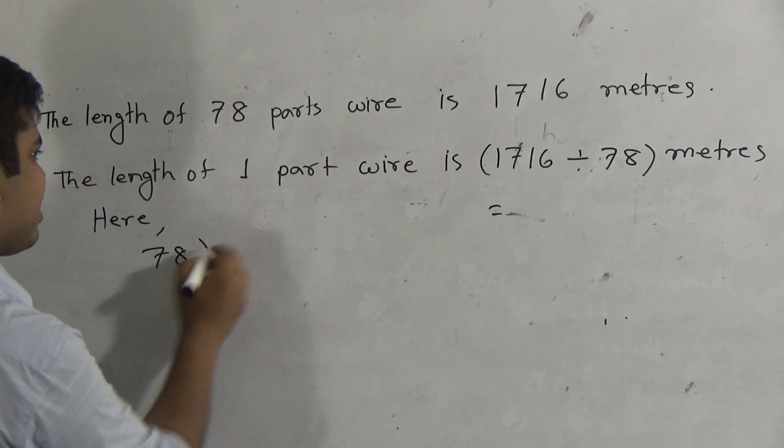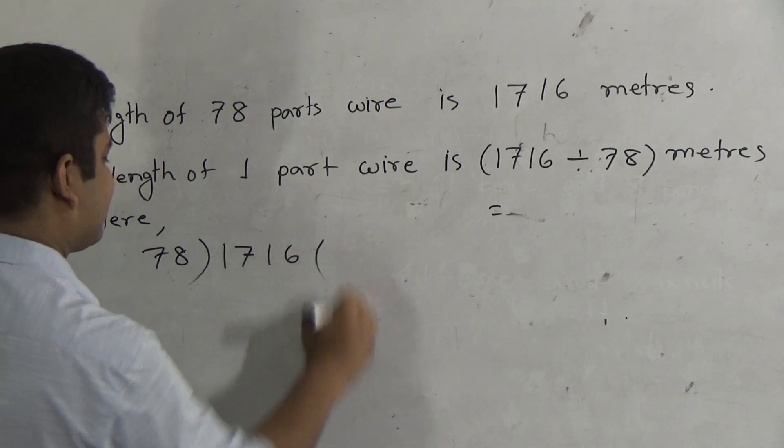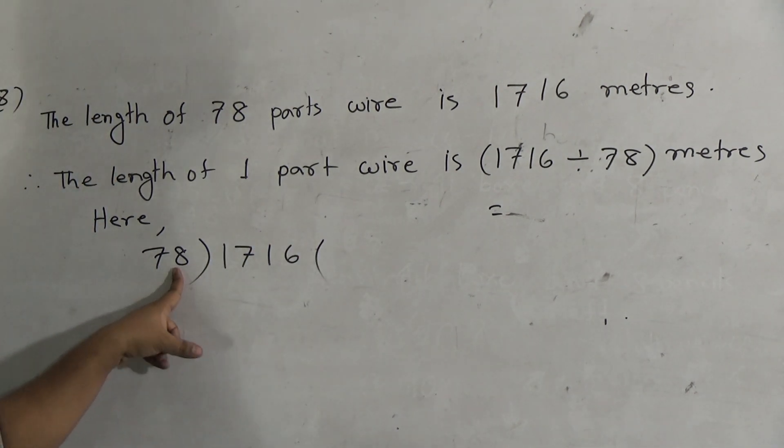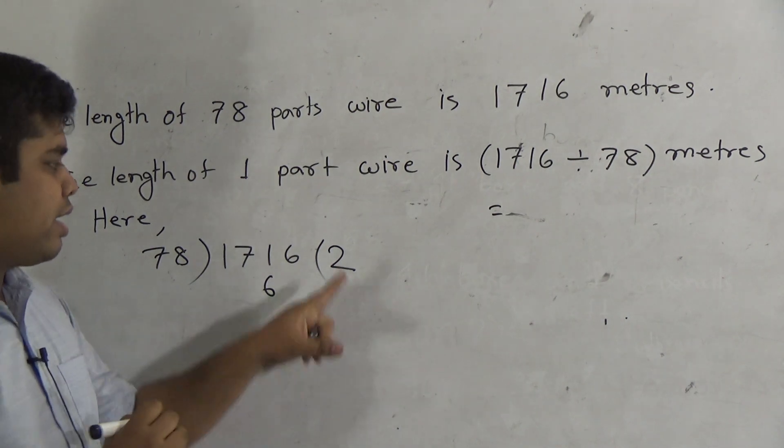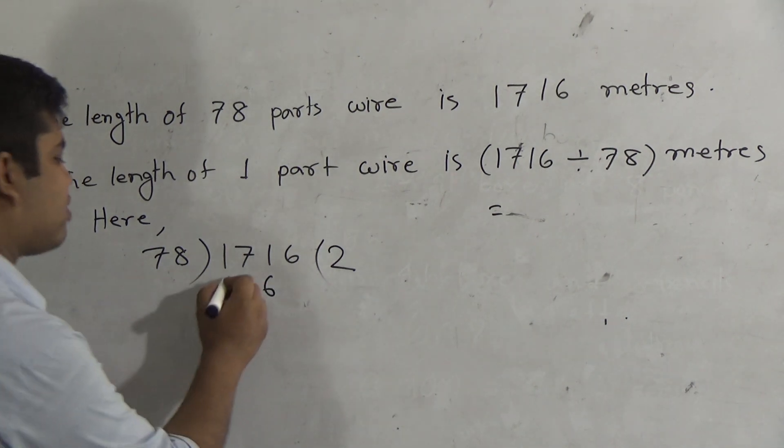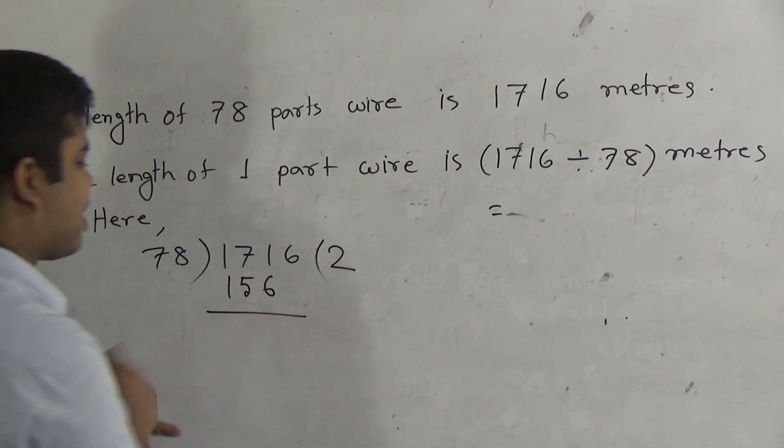Listen here. 78 divided by 1716. Listen. Here 78. At first we take 2 digits, which is 17. This 17 is less than 78. For this reason, we take 3 digits, 171. In 171, 78 goes in 2 times. 2, 8s are 16, carrying 1. 7, 2s are 14, plus 1, 15. Now we do subtraction.